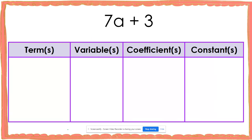Let's look at the expression 7a plus 3. In this expression, I notice that I have a plus sign, and I know that expressions are broken up into terms based on plus and minus signs. That means that 7a, because it's on the left side of my plus sign, is a term. And 3, because it's on the right side of my plus sign, is also a term. So this expression has two terms: 7a and 3.